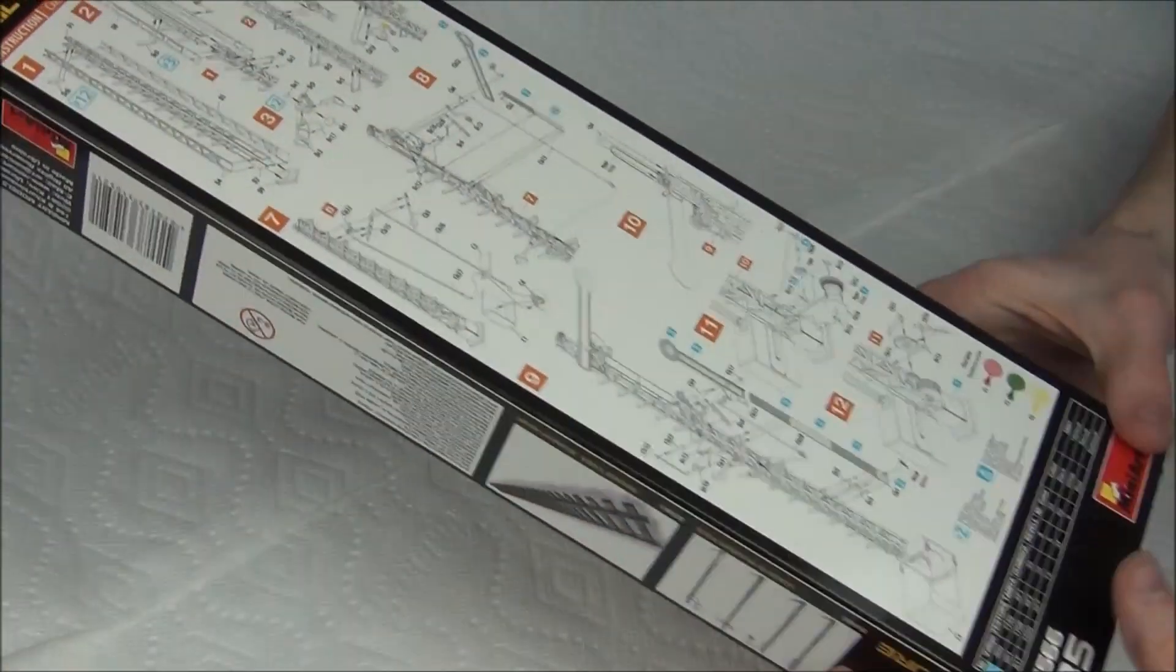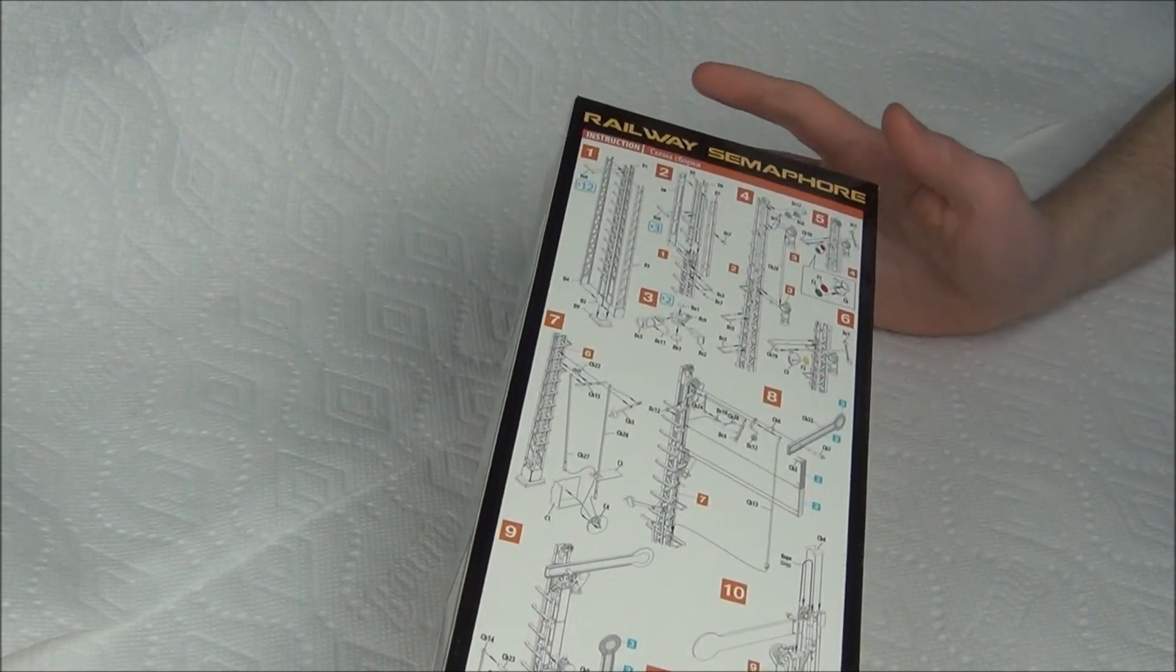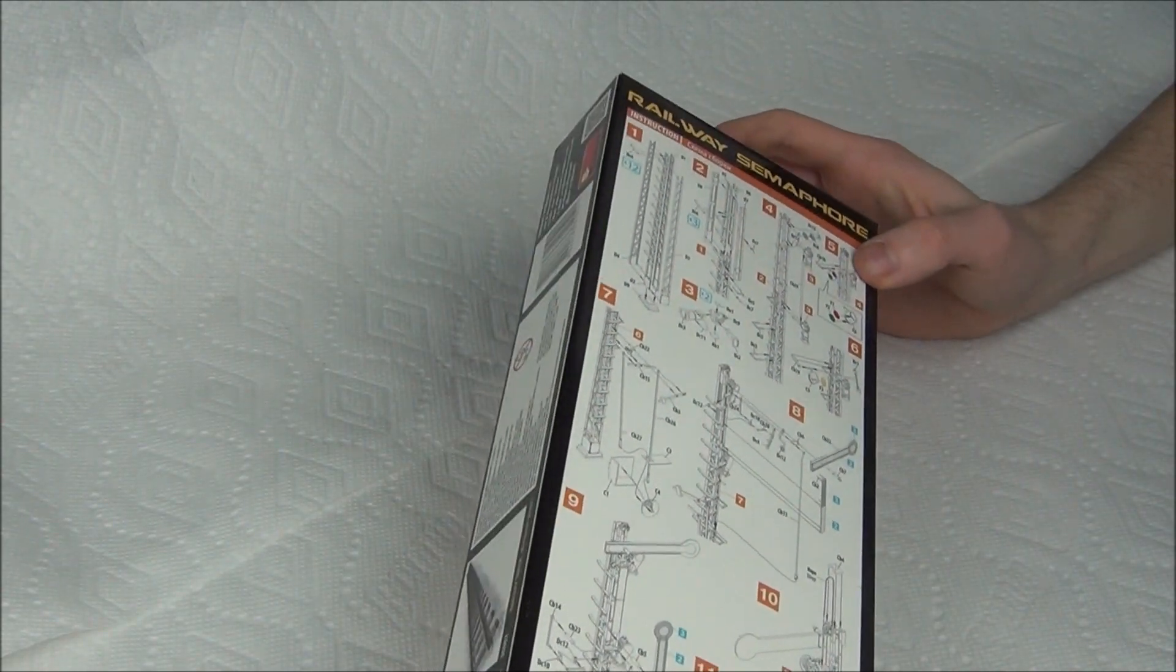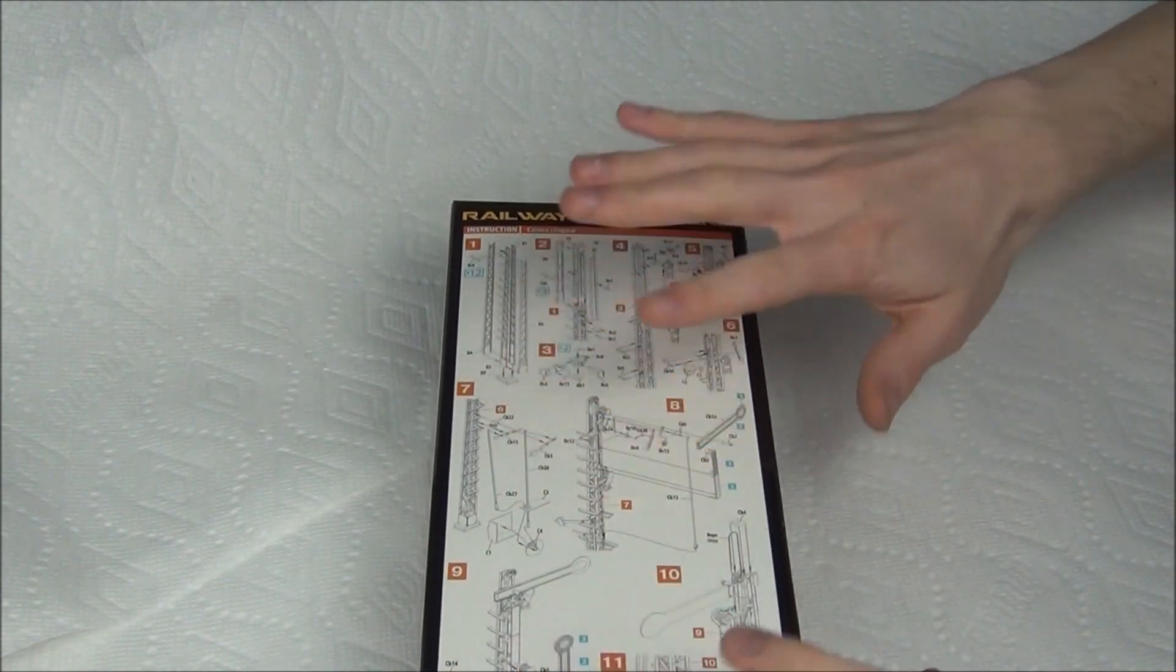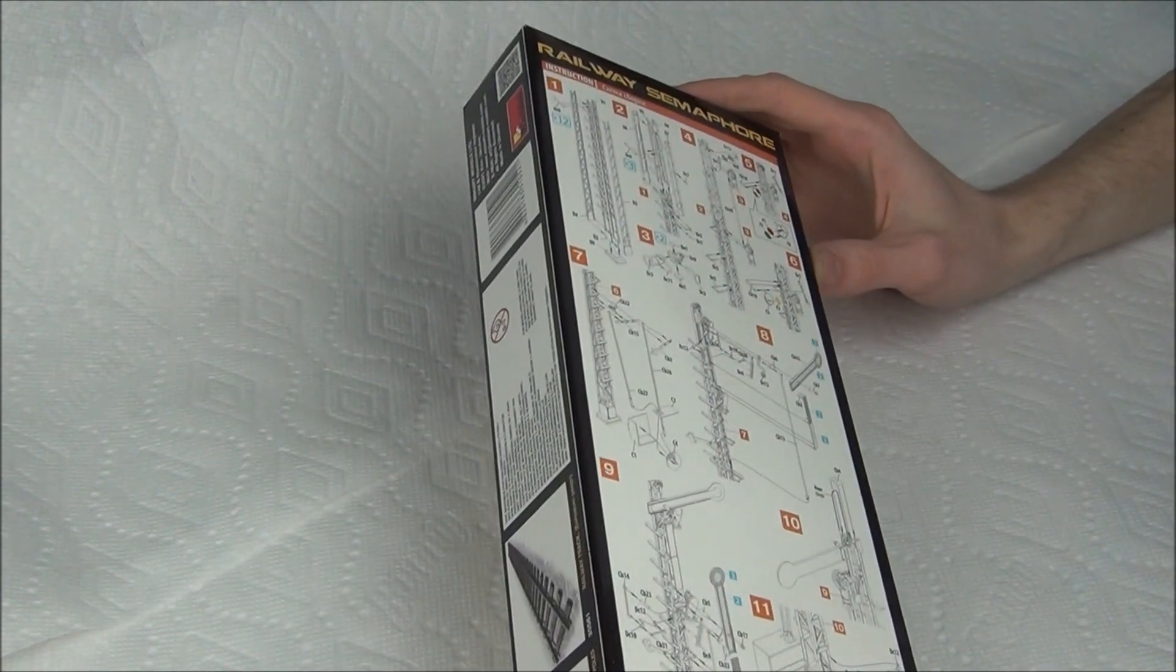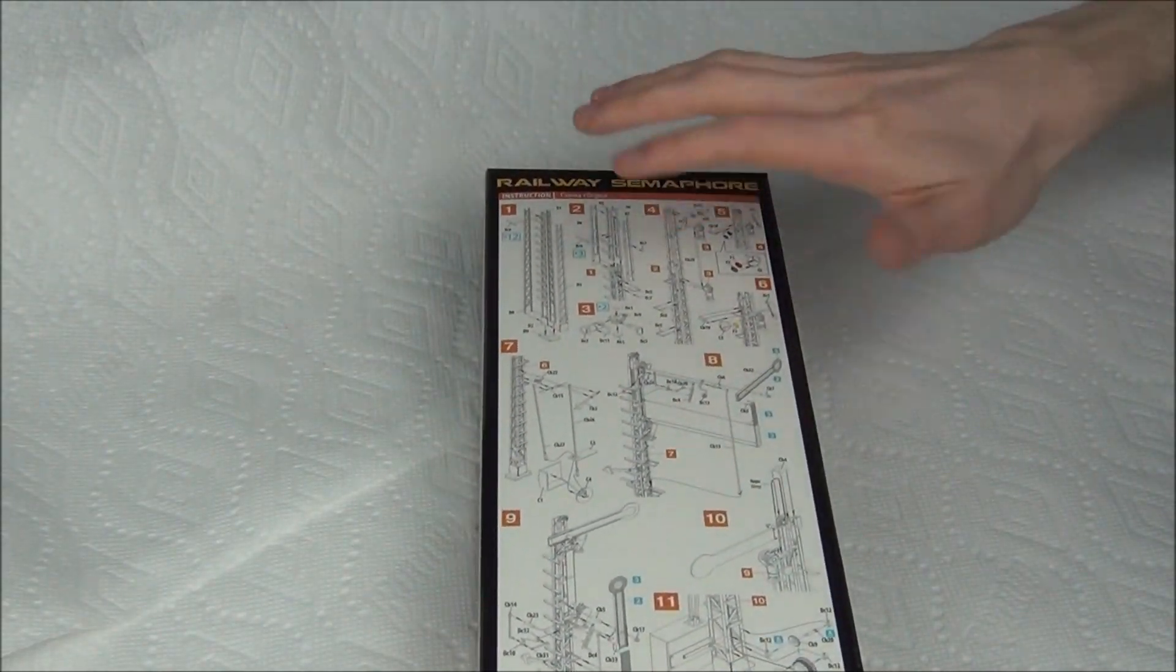On the back we have the instructions. There's no instruction sheet inside the box, just this on the back, which I think is alright. It might be a little awkward if you're trying to have this on your workbench while you work. You can always just cut it out if you need to, or unfold the box and lay it down flat.